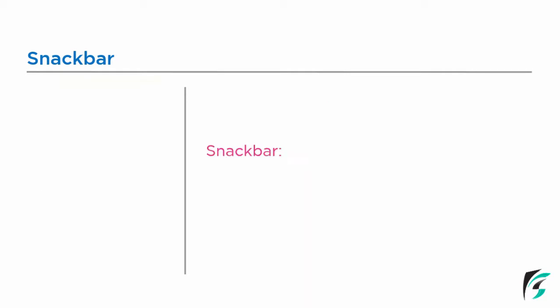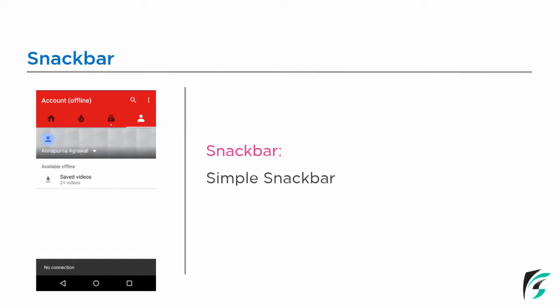The first kind of Snackbar we can use is a simple Snackbar. On the left side there is a YouTube application which says the account is offline or there is no internet connectivity. We can see at the bottom of the screen there is a Snackbar displaying the message 'No connection.' There is no action button. This is called the simple Snackbar, where only a message is displayed.